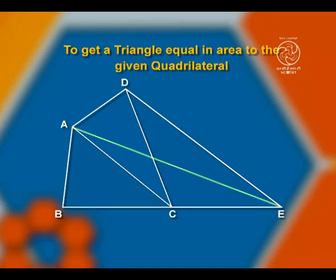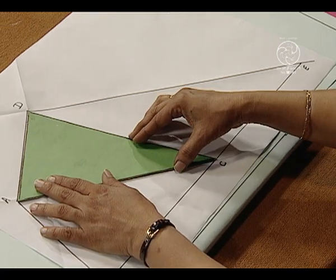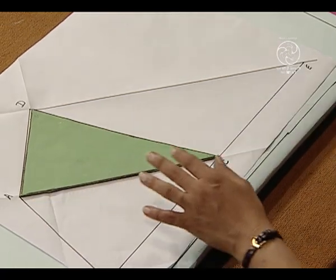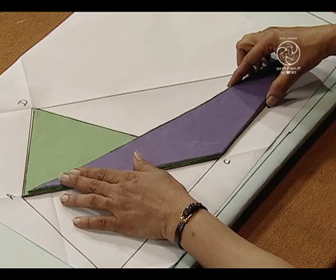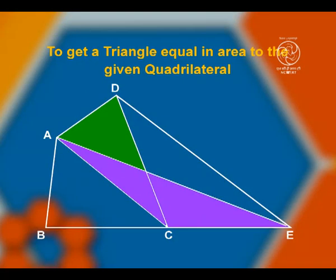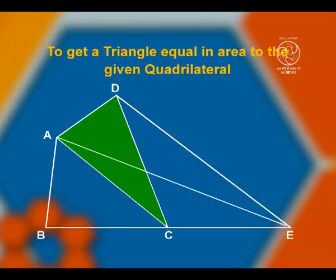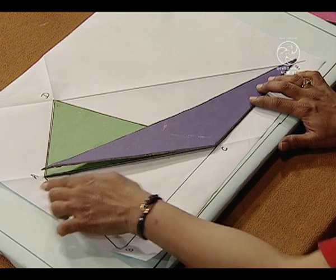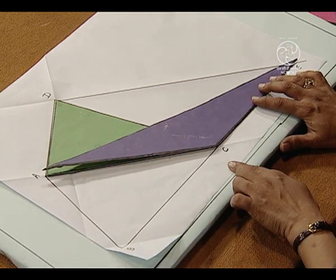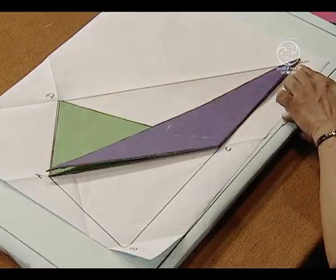Now, we have cut-outs of triangles ADC and ACE. These two triangles ADC and AEC lie on the same base AC and between the parallels AC and DE.